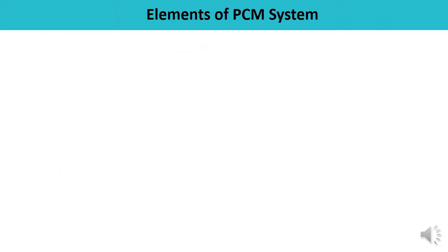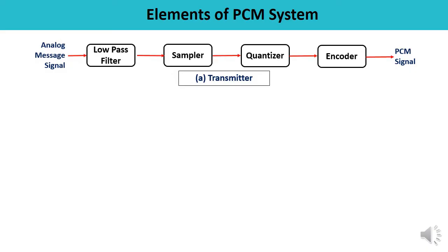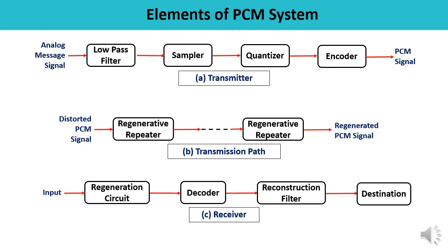Let's discuss the elements of the PCM system. The overall PCM system can be categorized into three main parts. First is the transmitter, whose components include a low pass filter, sampler, quantizer, and encoder. Second is the transmission path, where a number of regenerative repeaters are used. Third is the receiver, which contains a regeneration circuit, decoder, reconstruction filter, and destination.